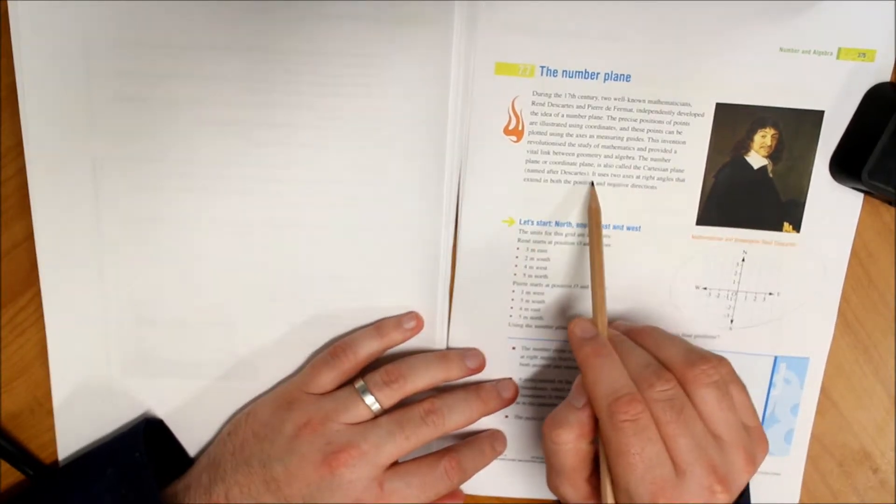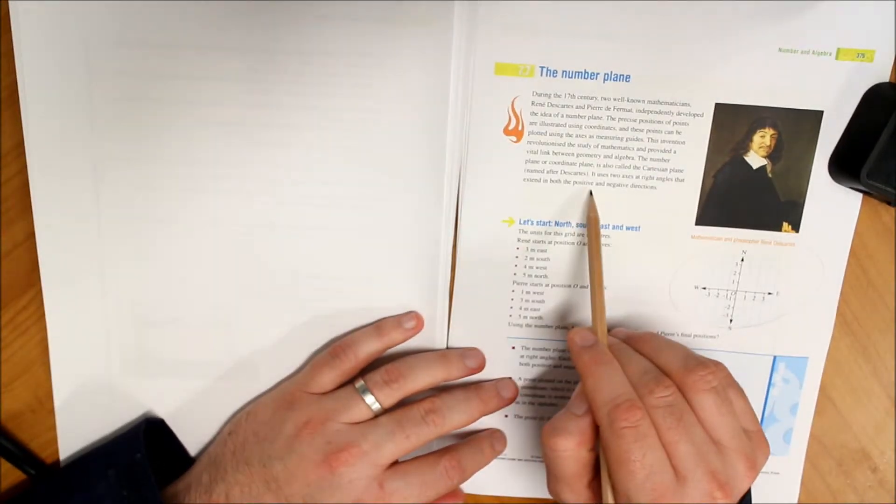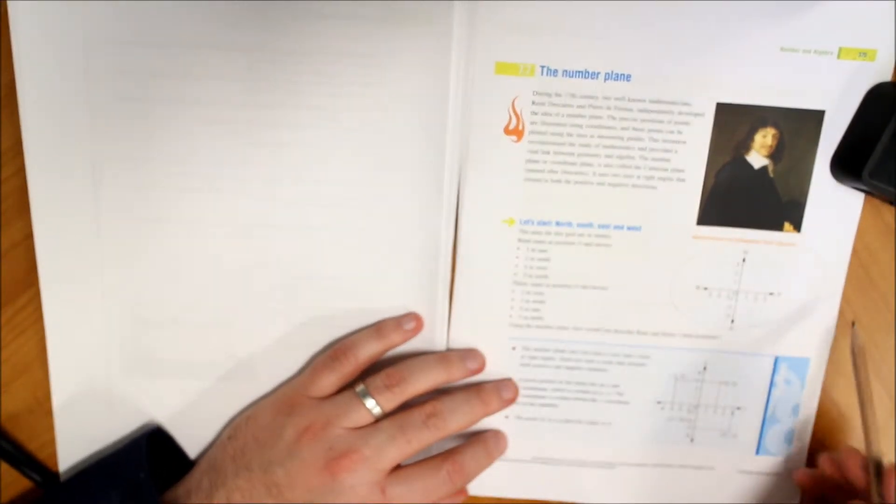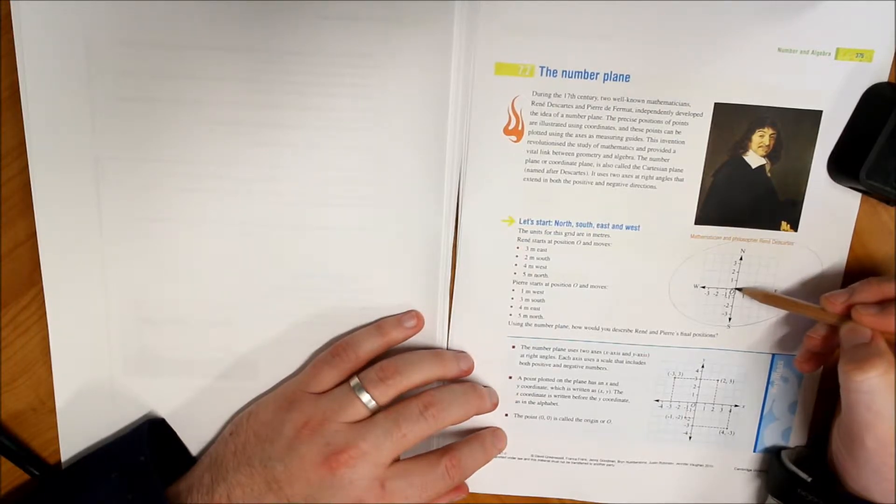The number plane, or coordinate plane—it is also known as the Cartesian plane—uses two axes at right angles that extend in both the positive and negative directions. So as you can see here, we start right here, which is actually the O there, stands for origin.